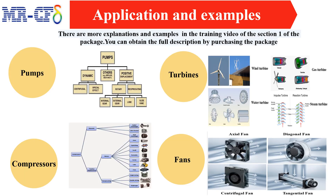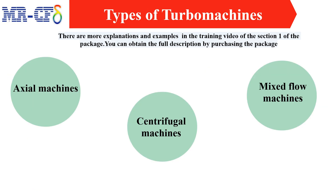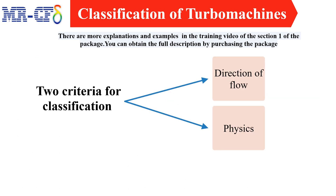Famous examples of turbo machines include pumps, compressors, turbines, fans, and mixing tanks. We discuss the types of turbo machines in terms of their axes and explain how they work. There are two criteria for classification of turbo machines: direction of flow and physics. The tutorial video explains what this classification means based on each of these criteria.